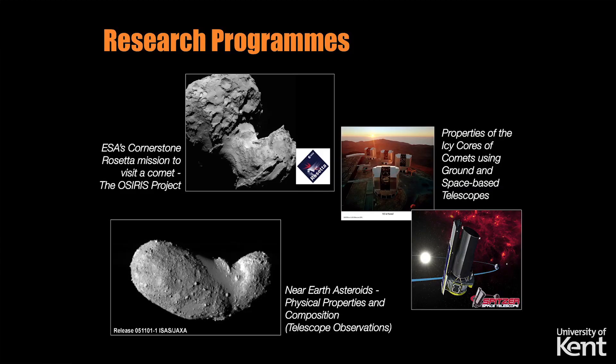Before I go into detail on that, I'll give you a brief introduction to the kind of research programs that I'm engaged in. I think of myself as a ground-based astronomer first and foremost. I use ground-based telescopes down in Chile quite a lot, as well as space telescopes like the Spitzer Space Telescope, and I use those to study the icy cores of comets. I also use the same telescopes to study near-Earth asteroids — their physical properties and chemical composition, particularly those that come close to Earth.